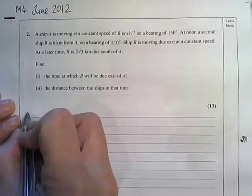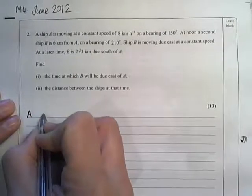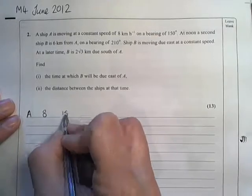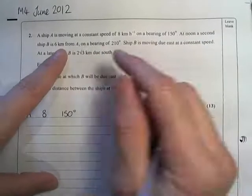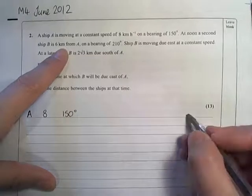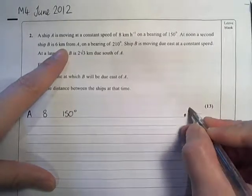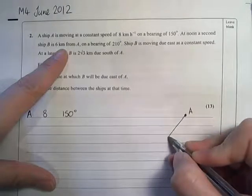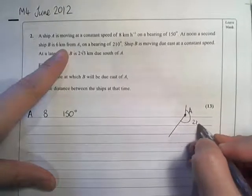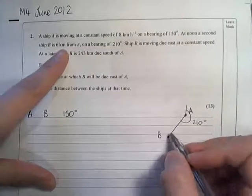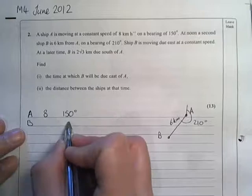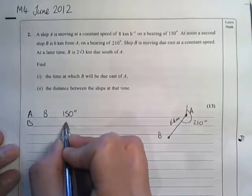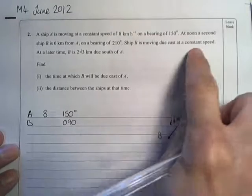Ship A is moving at a constant speed of 8 on a bearing of 150 degrees. At noon, a second ship B is 6 kilometers from A on a bearing of 210 degrees. So if A is here, B is on a bearing of 210 degrees, and the distance initially between them is 6 kilometers. Then B is moving due east, on a bearing of 090 at a constant speed.